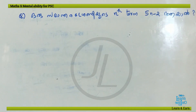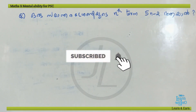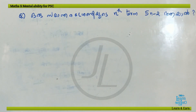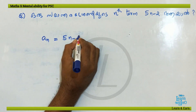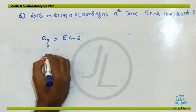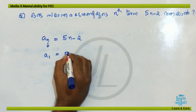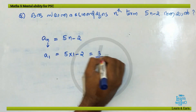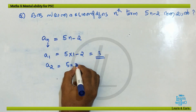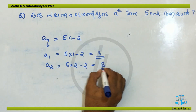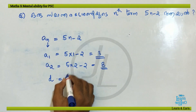If we use S, let's take examples with first term 5, 3, 5. If we get the first time: A1 is equal to 5 into 1 minus 2, that is 5 minus 2 is equal to 3. Let's look at the common difference. Second term is equal to 5 into 2 minus 2, that is 10 minus 2 is equal to 8. So the common difference is second term minus first term, which is 8 minus 3, that is 5.